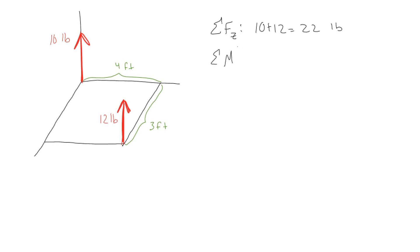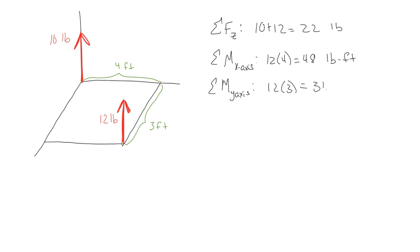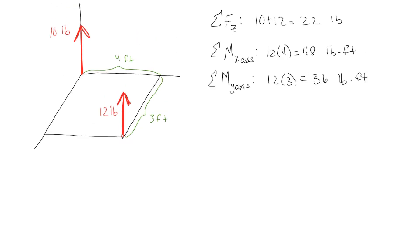Now if I'm doing the moment — the moment about the x-axis is going to be that 12 pounds times 4, and that's going to be positive, so that's 48 foot-pounds. And the sum of the moments about the y-axis is going to be 12 times 3, so 36 foot-pounds. Wherever we go, we have to maintain that expectation.